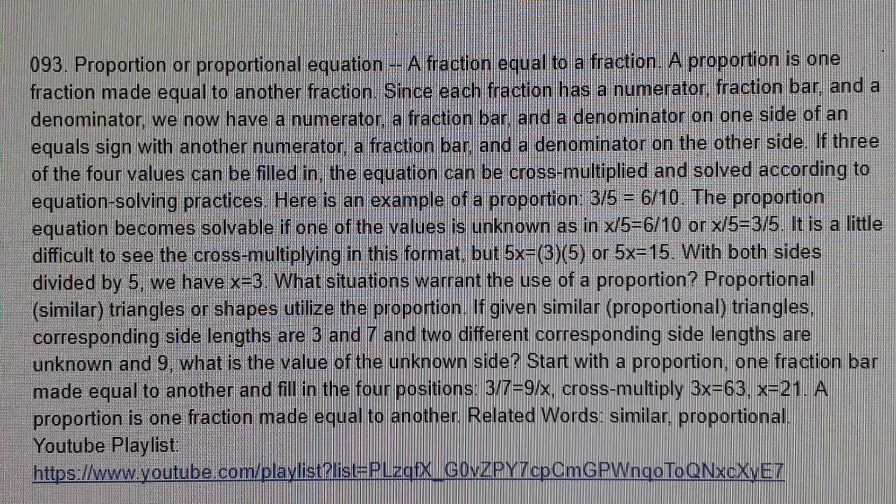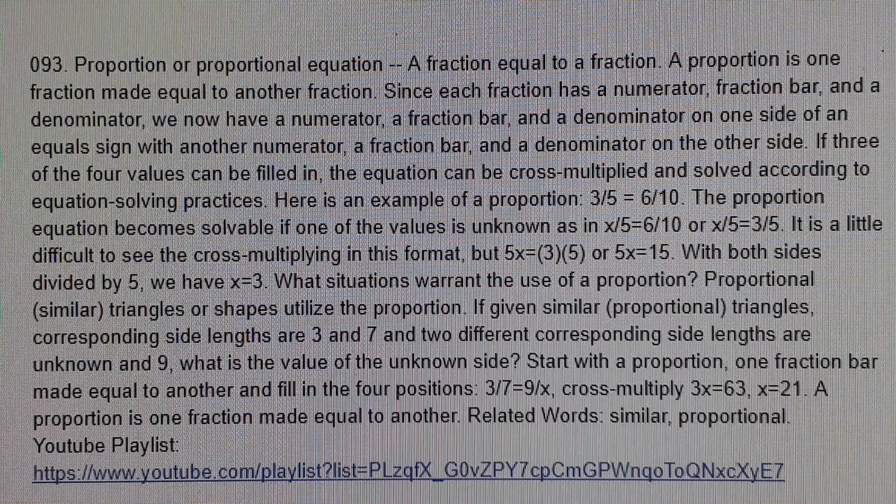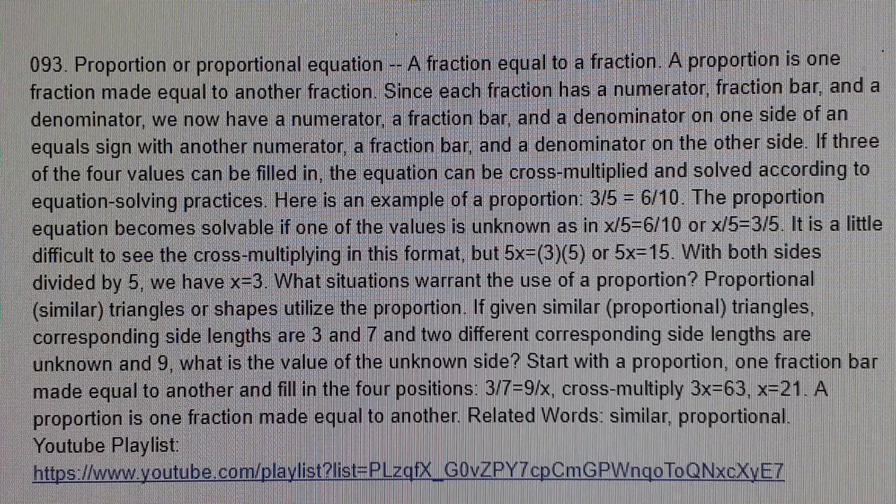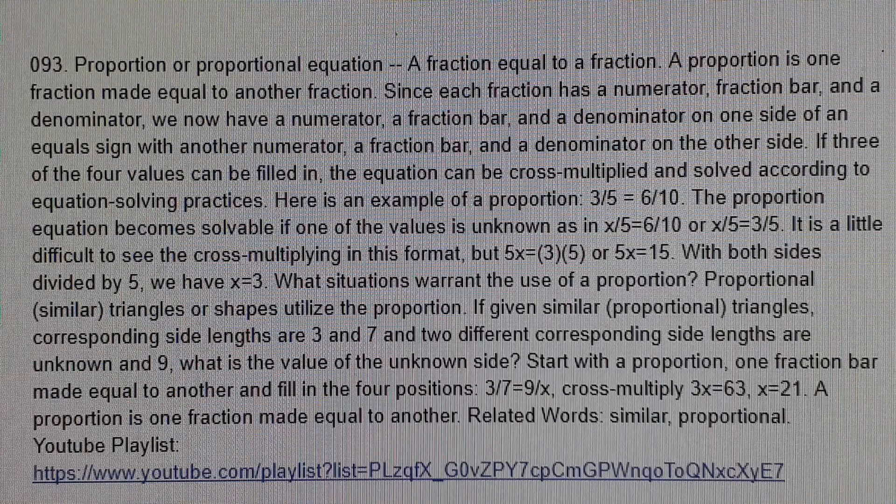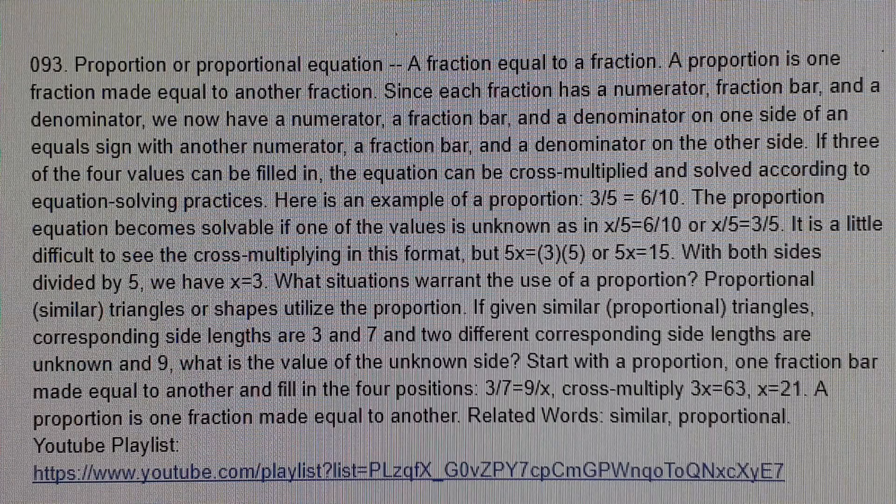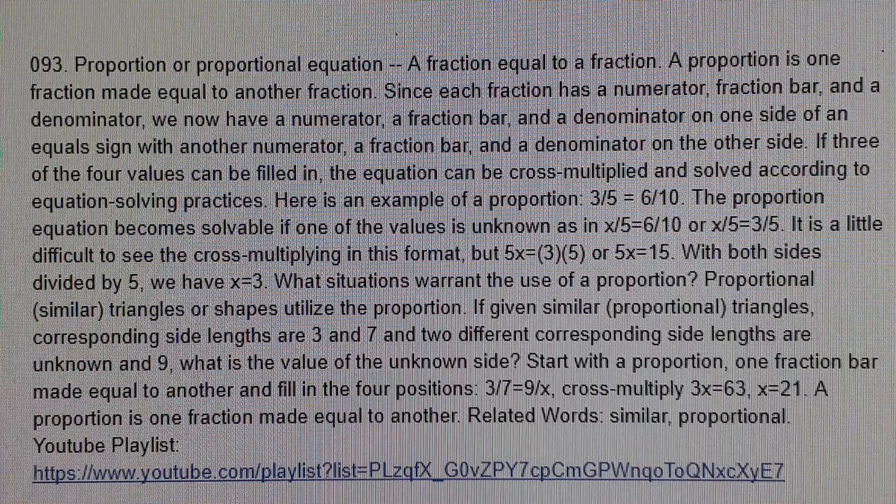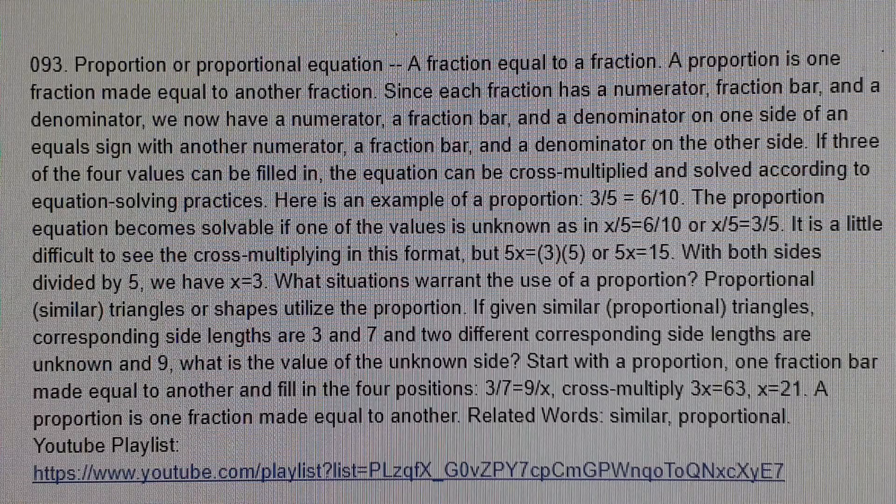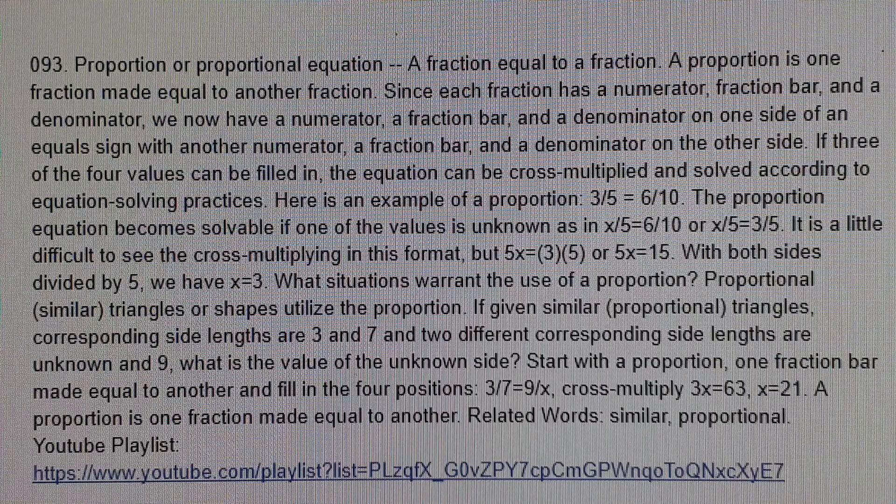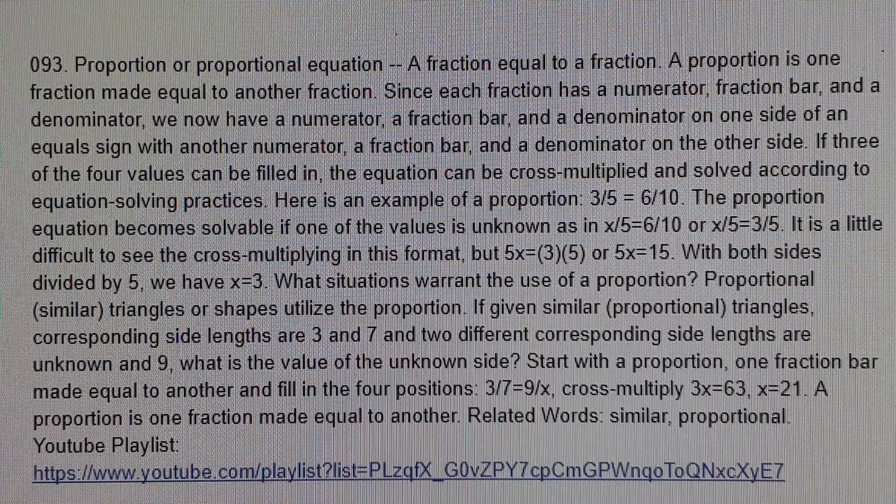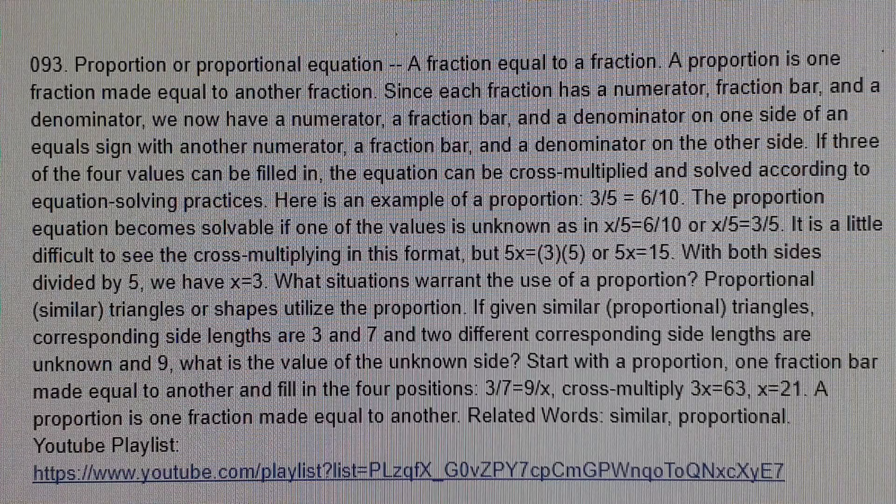If given similar proportional triangles, corresponding side lengths are 3 and 7, and two different corresponding side lengths are unknown and 9. What is the value of the unknown side?